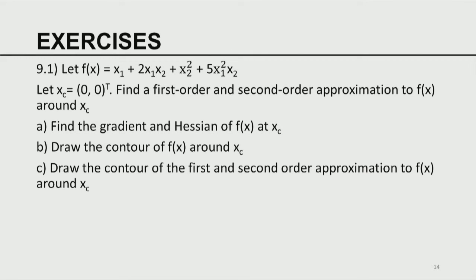With this we come to the end of this module. There are a couple of exercises: given a simple function F of x, start from xc, compute the first- and second-order approximations, find the gradient and Hessian at that point, and draw the contours of F of x alongside those of the approximations. This illustrates how local solutions progress toward the global solution as we move from one operating point to another. Thank you.